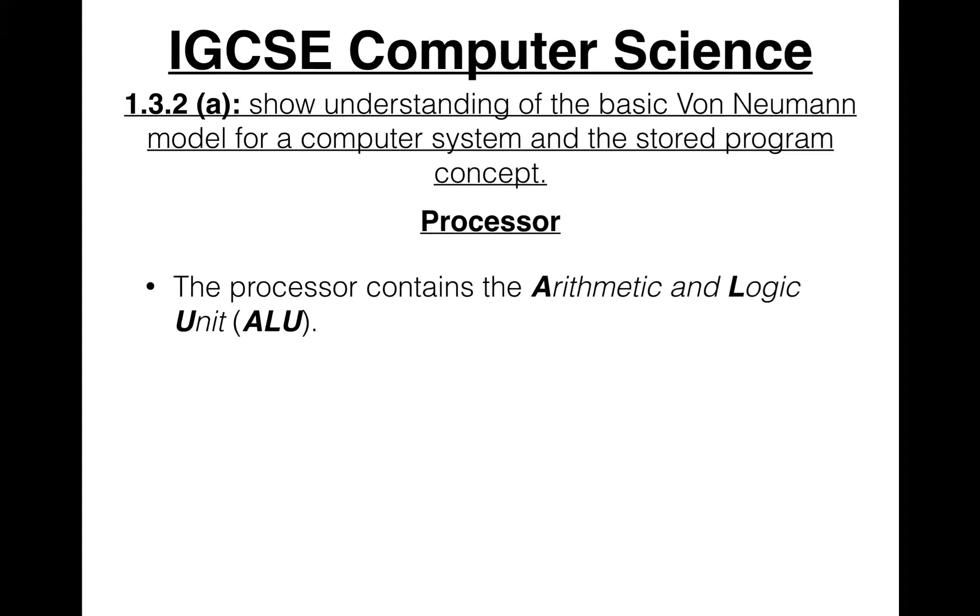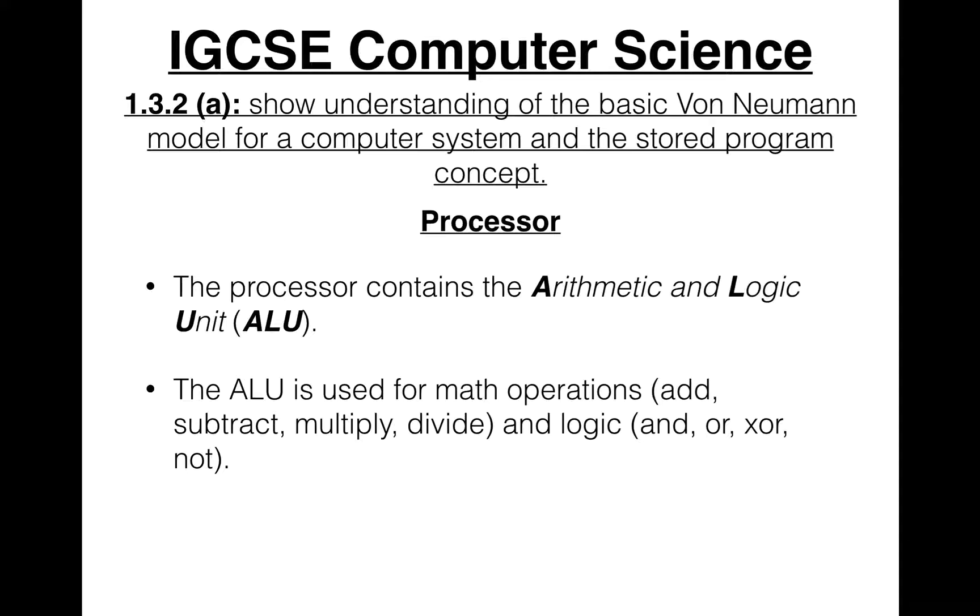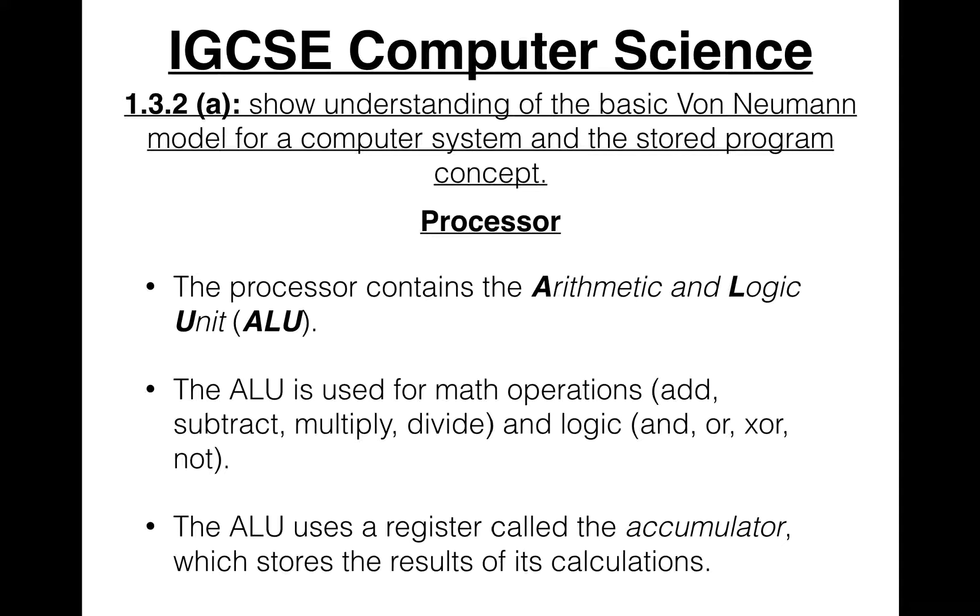Let's look at the processor. The processor contains the ALU, the arithmetic and logic unit. The ALU is used for math operations, like add, subtract, multiply, divide, and logic operations, such as AND, OR, XOR, and NOT. The ALU makes use of a register called the accumulator, which stores the results of its calculations. That's another register you need to know, which was the ACC at the top of the processor, the accumulator.